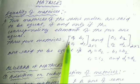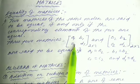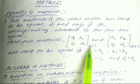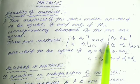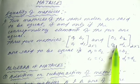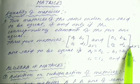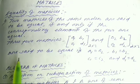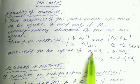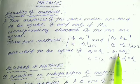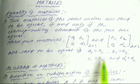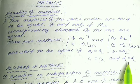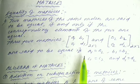For example, two matrices [a1, b1; c1, d1] of order 2×2 and [a2, b2; c2, d2] of order 2×2 are said to be equal if a1 equals a2, b1 equals b2, c1 equals c2, and d1 equals d2.